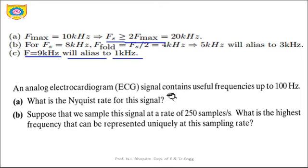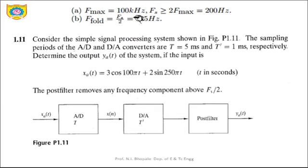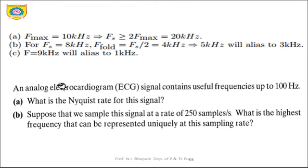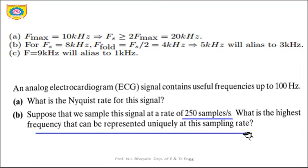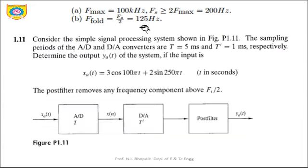Next example: an analog ECG signal contains useful frequencies up to 100 Hz. The Nyquist rate is 100 × 2 = 200 Hz. For the second part, if the signal is sampled at 50 samples per second, the highest frequency that can be represented uniquely is FS/2 = 250/2 = 125 Hz.